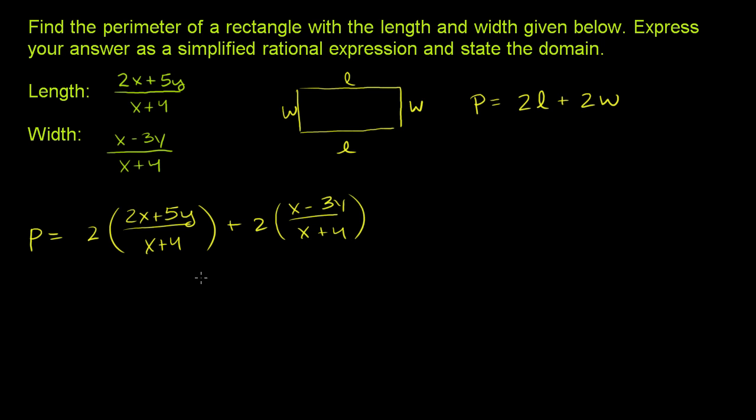Now immediately, we can constrain the domain. The only number that will not work for x here is the number that will make either of these denominators 0. And that number is negative 4. If x was negative 4, then the denominators would be 0 and these would be undefined. So we'll constrain the domain. We'll say x cannot be equal to negative 4.